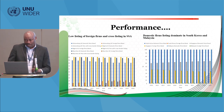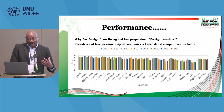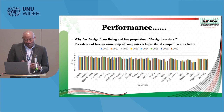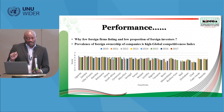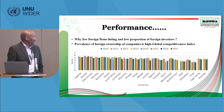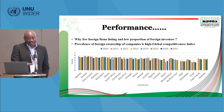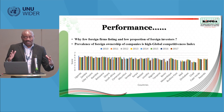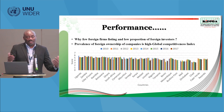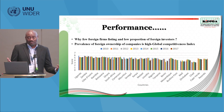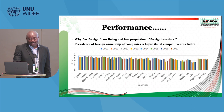We ask ourselves: why are there so few foreign firms listing, and why is participation by foreign investors so low? Looking at the prevalence of foreign ownership using the Global Competitiveness Index, most African countries range around five, suggesting relatively liberal capital flows policies. Yet we are not attracting foreign investments. Why — despite having open capital flow policies — are we failing to attract them? This suggests investors may be looking beyond our policies at other factors.